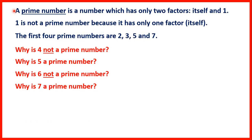A prime number is a number which has only two factors: itself and one. One is not a prime number because it only has one factor, that's itself. The only factor of one is one, and a prime number always has two factors.